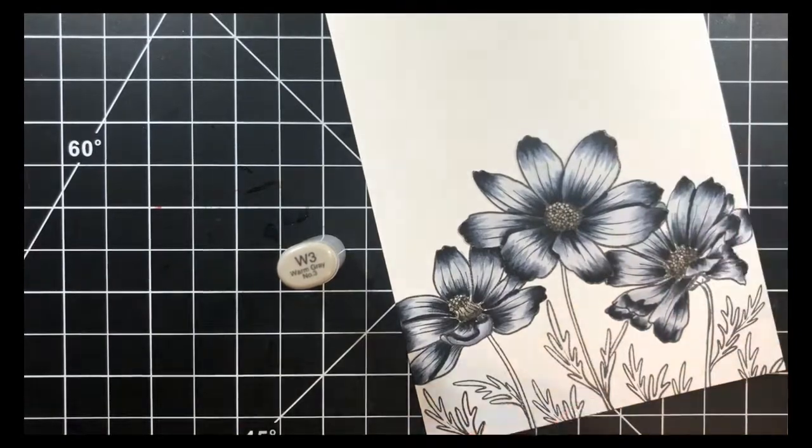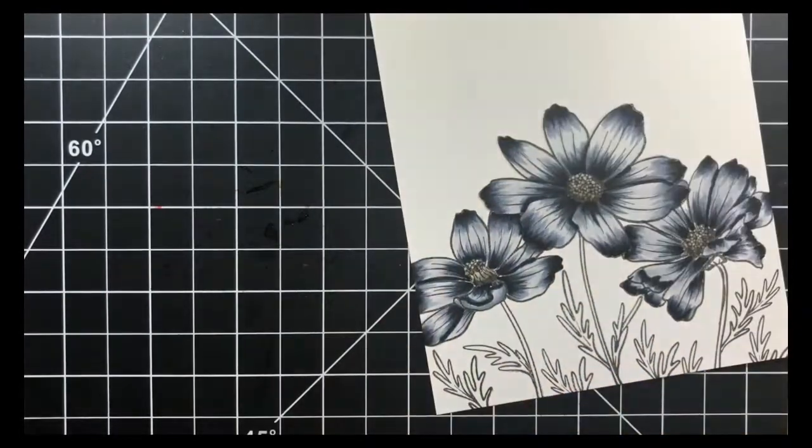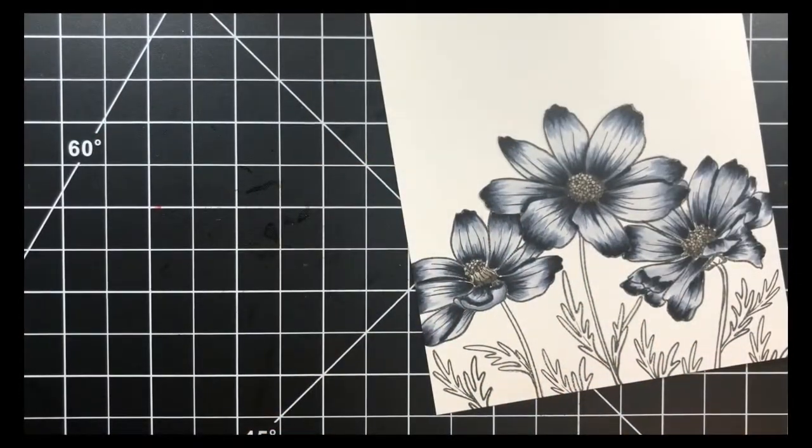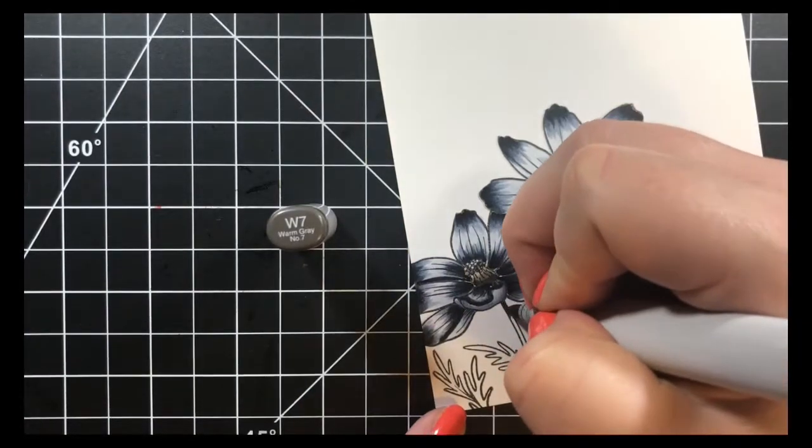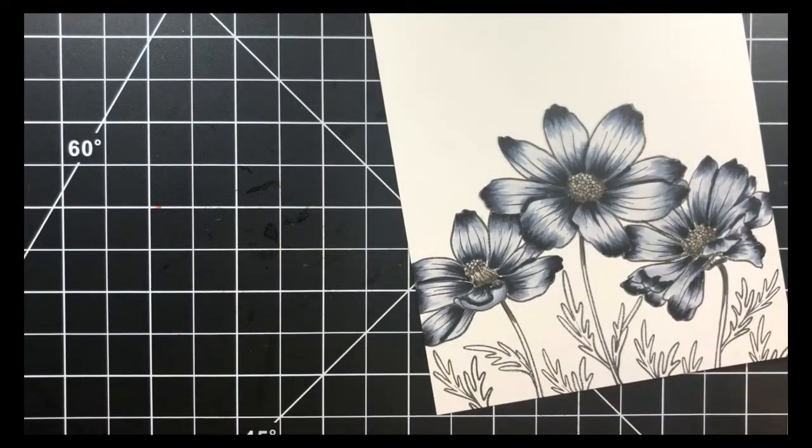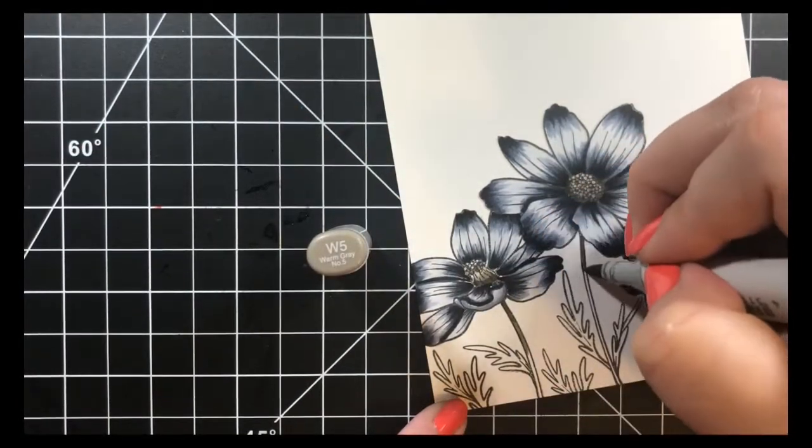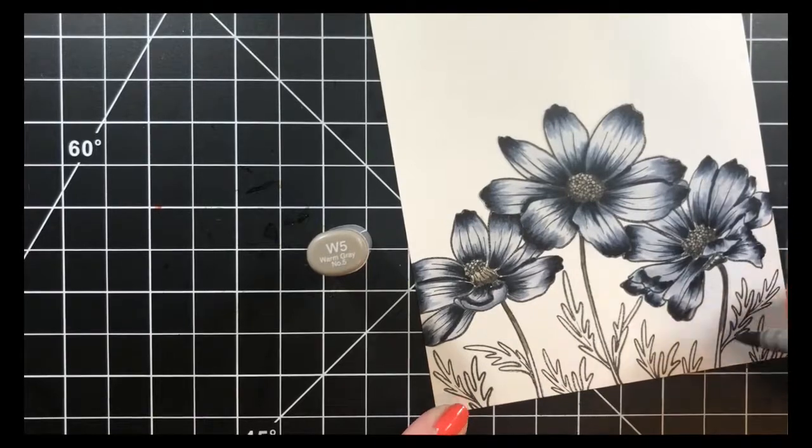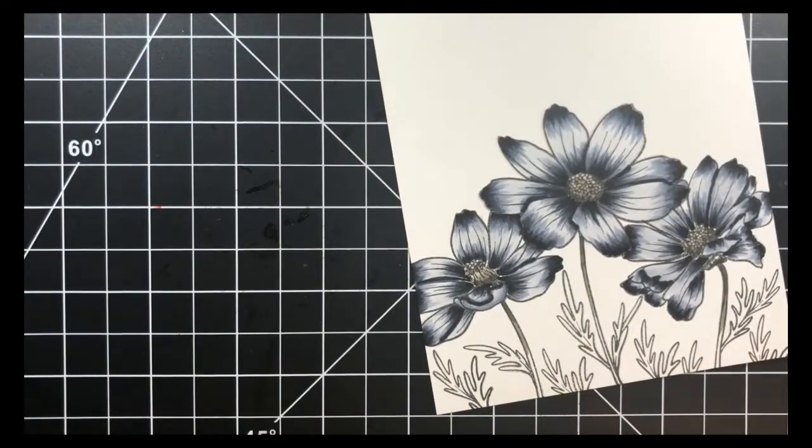I'm laying out my darkest area where the center of the flower would be deepest into the flower, so the part that would be raised up you want to keep that the lightest. For the stems, I'm just concentrating the darkest areas being right underneath the flower and then working my way down to my lightest.